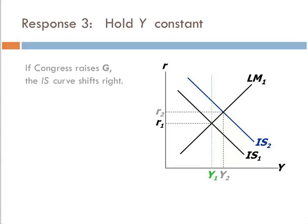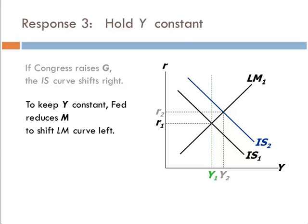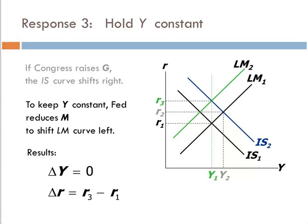Finally, what if the Fed decides to hold real output constant? If we're already at potential Y1 and go to Y2, all we're going to do is cause inflation. So the Fed reduces the money supply such that there's no change in output, but a fairly large change in the interest rate — even larger than if they'd done nothing — because they're reducing the money stock in circulation. Three very different results depending on how the Federal Reserve responds to the increase in government spending.